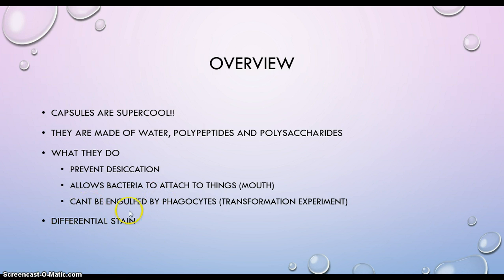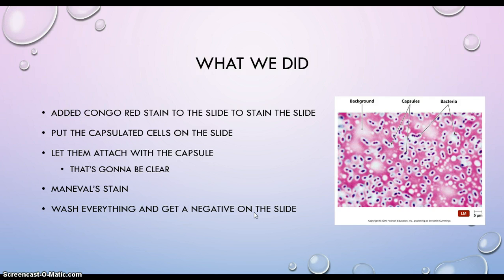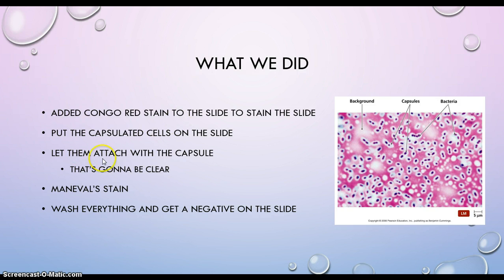This is a differential stain, so let's look at how it differentiates. What we did was we added Congo Red to the slide — we just have a blank slide, added Congo Red to it, put the cells on it, and then allowed that combination to air dry. What this does is it allows the capsules to attach to the slide. The Congo Red stains the whole entire slide, but the capsules are then attached and are going to appear clear.